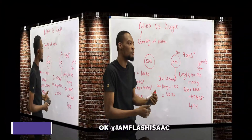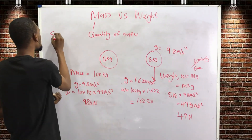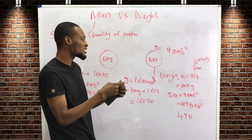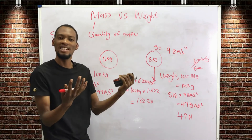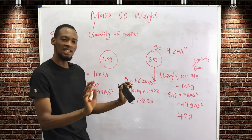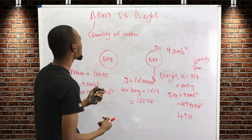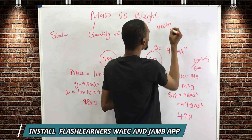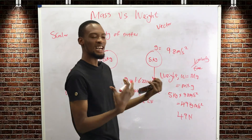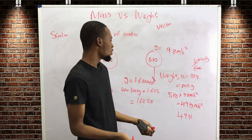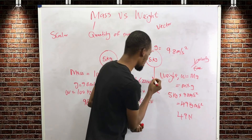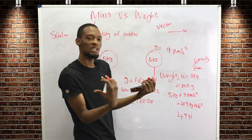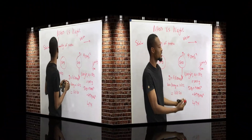Mass is a scalar quantity — only the magnitude matters: 20 kg, 30 kg, 40 kg. Weight, on the other hand, is a vector quantity. Weight is a force, so it has both magnitude and direction. We represent the direction with an arrow — for example, this force acts downward.